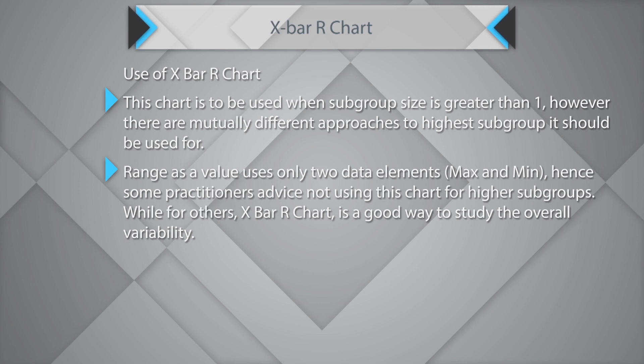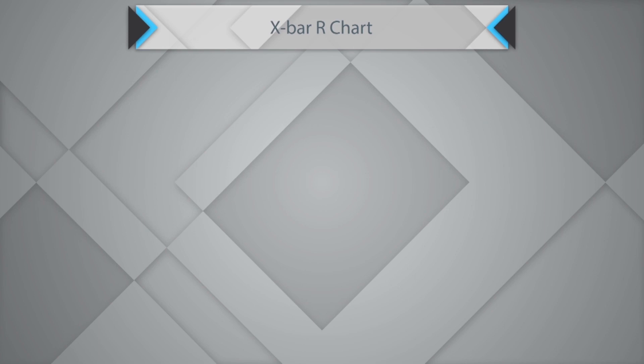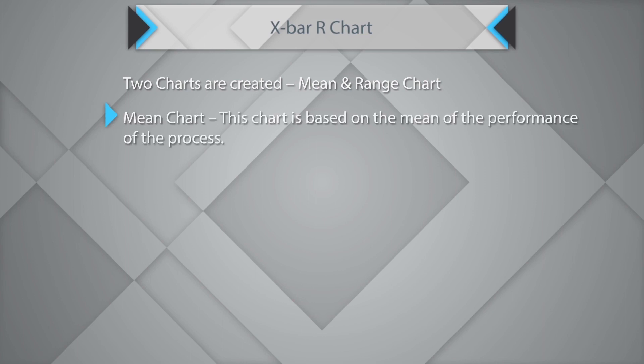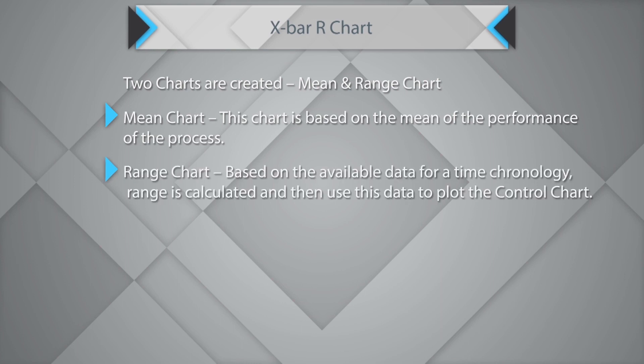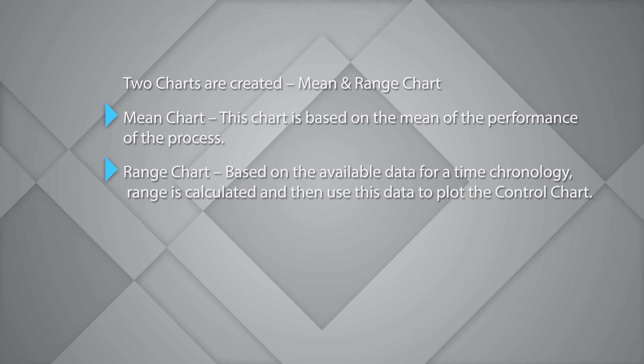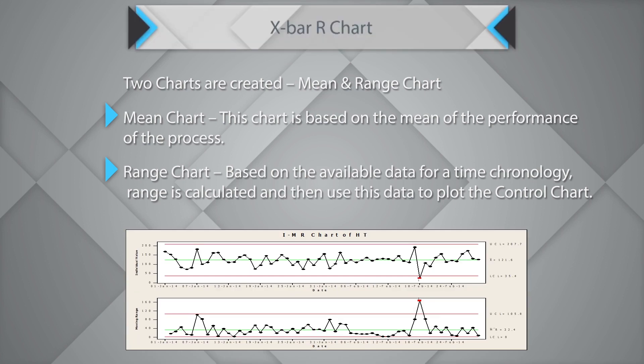That's what certain practitioners contend when they advise not using the X-bar R chart for greater subgroup sizes, because range uses only two data sets. While for others, X-bar R chart is a good way to understand overall variability, and businesses use the X-bar R chart for up to eight or nine subgroups. When you draw the X-bar R chart, two charts are created: mean and range chart. The mean chart is based on the mean of the process performance, while the range chart is built on a new dataset of range values calculated from the same time chronology of the different subgroups.